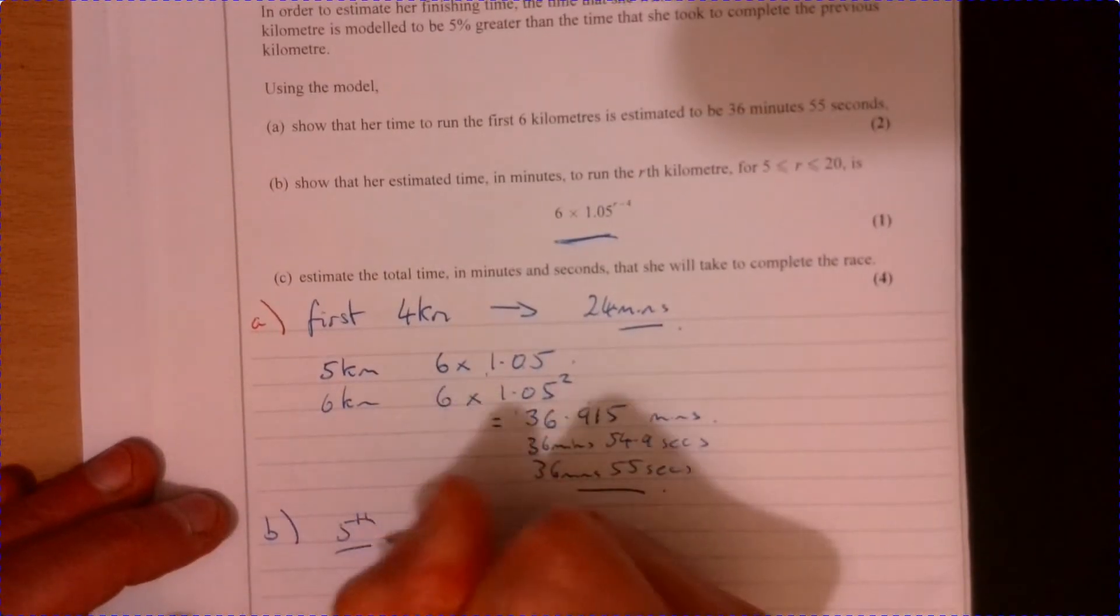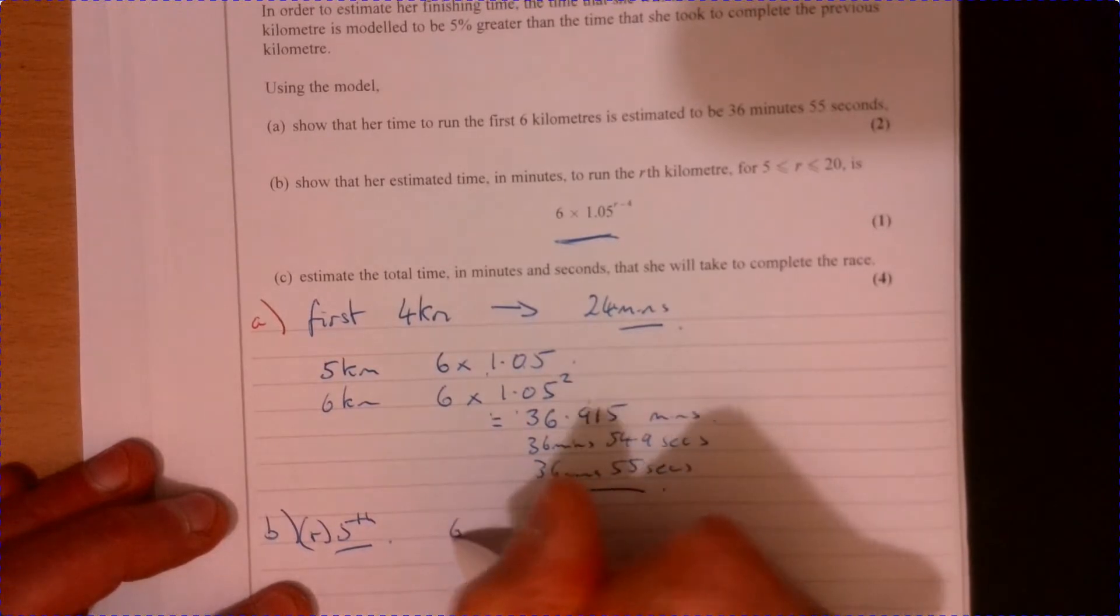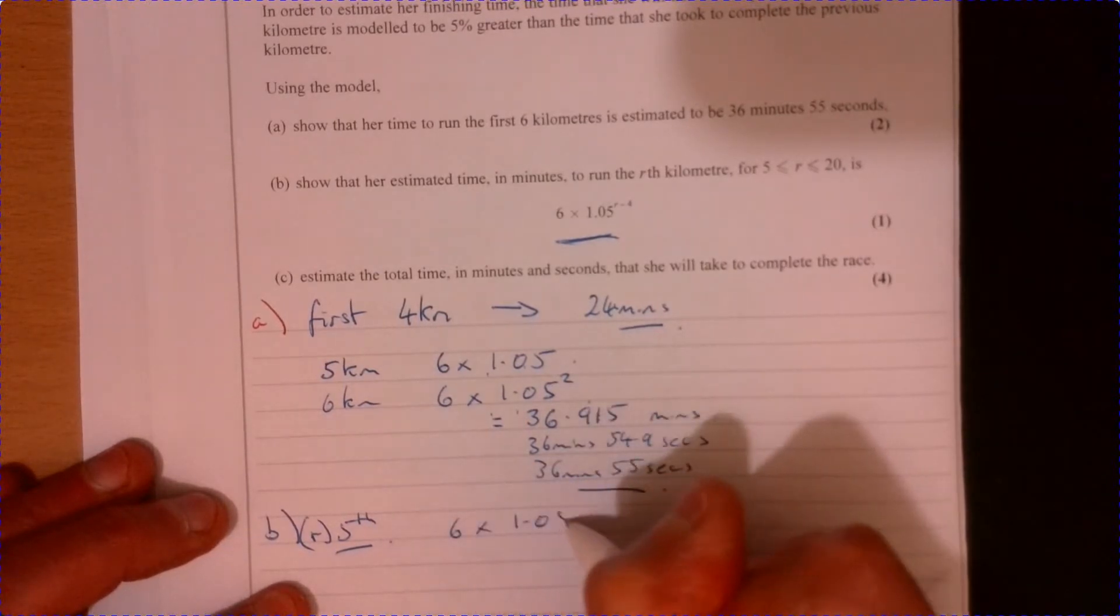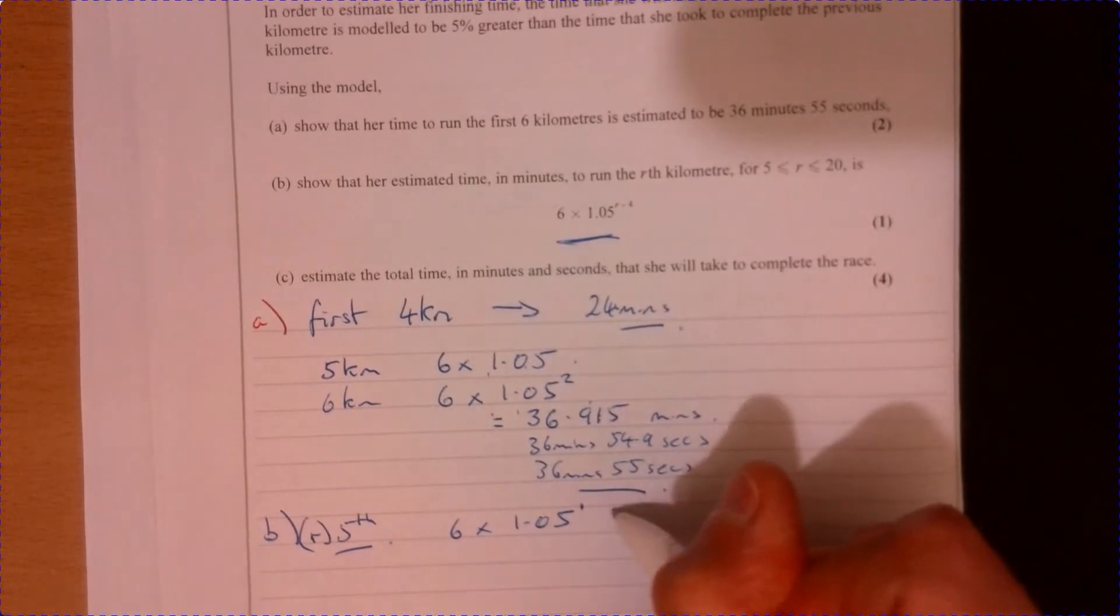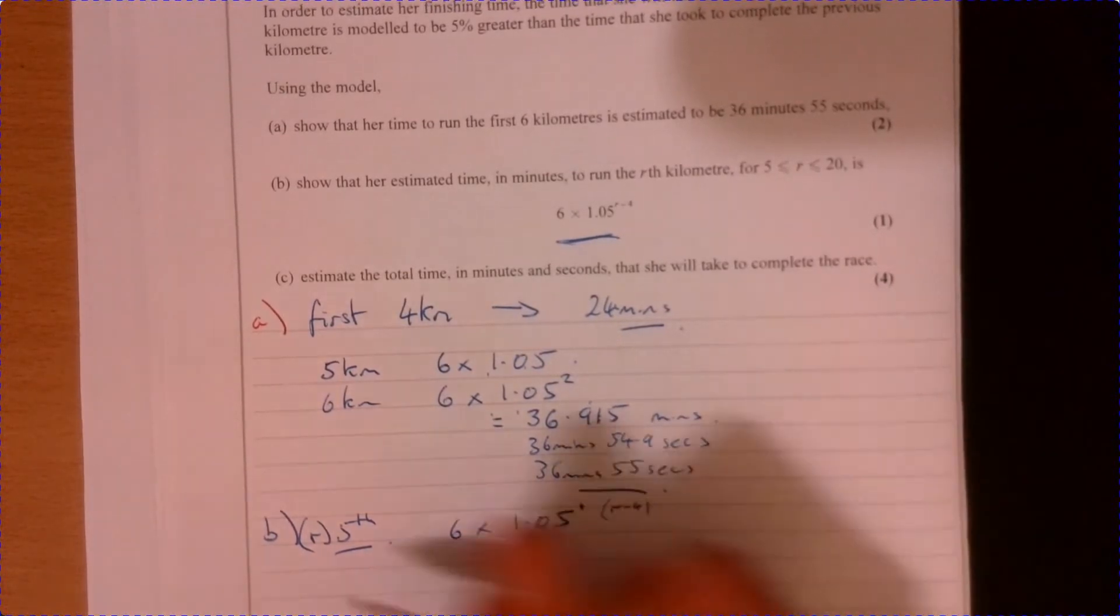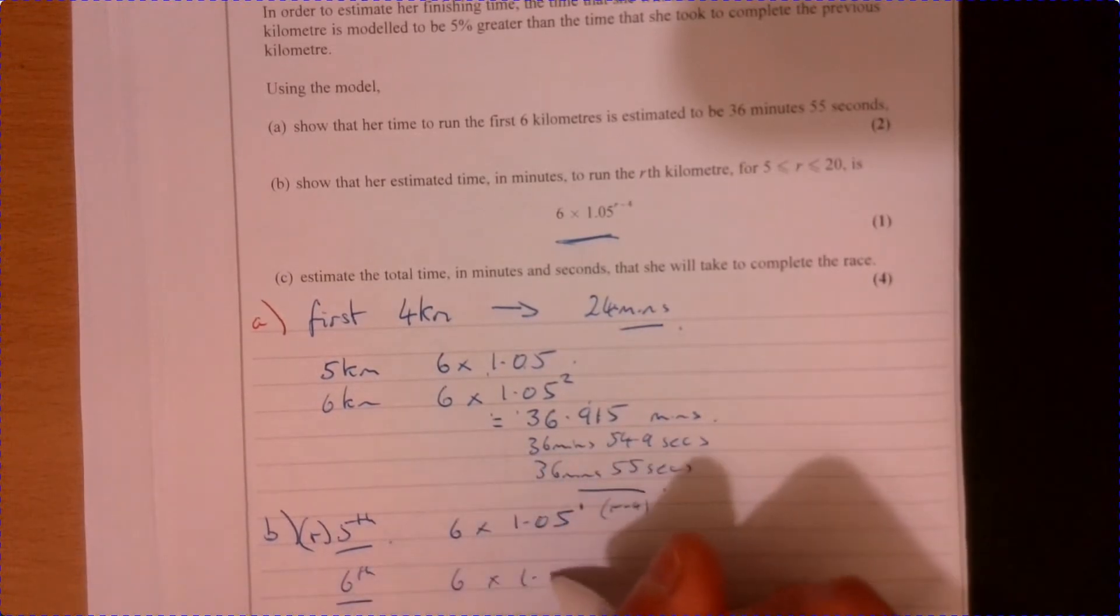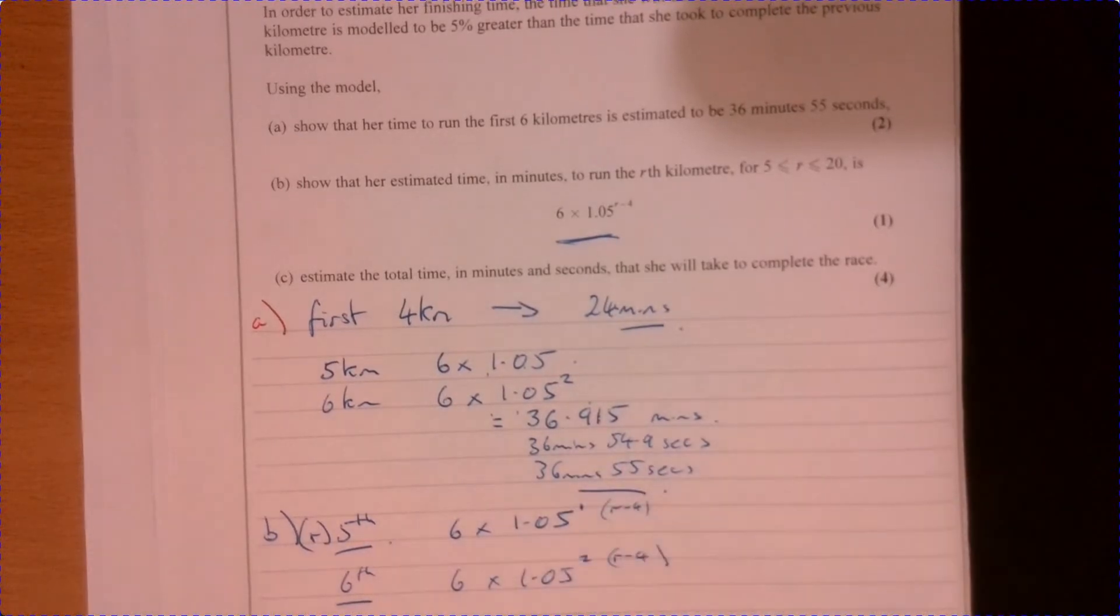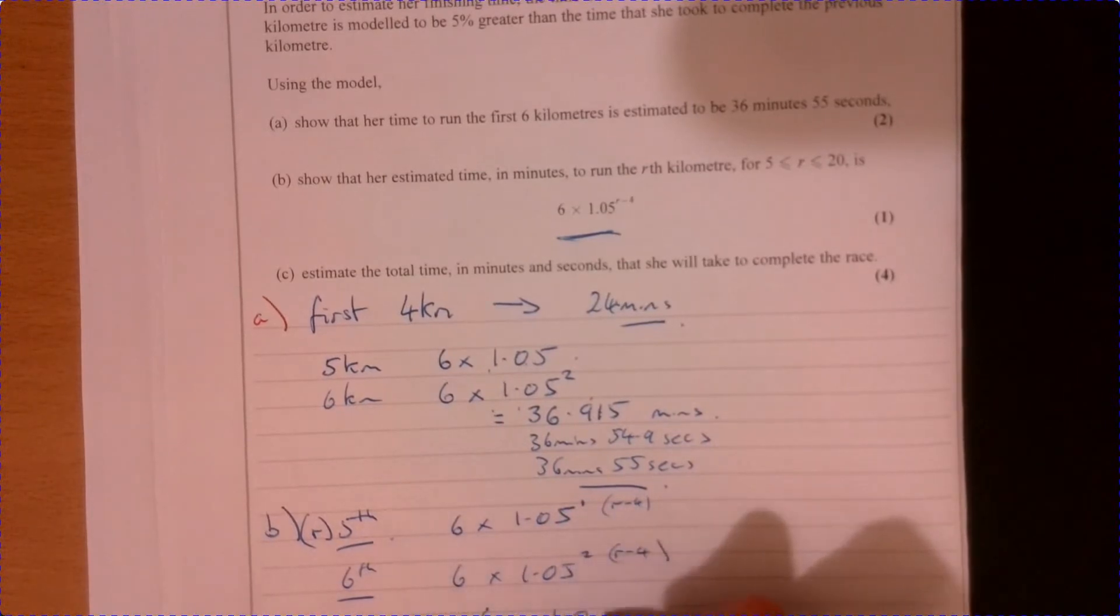Well, the fifth kilometre, think about that is R. That's what they've used in this R. So that would be six times 1.05 to the one, if you like. So that's R take away four. And then the sixth one is six times 1.05 squared. So that's, again, that's R take away four. So from there, you can say it's going to be like this, isn't it?